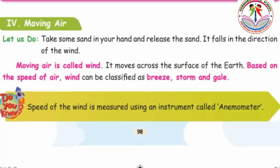Air can move from one place to another place, so the moving of air is called wind. Wind moves across the surface of the earth. Based on the speed of air, we can classify it as breeze, storm, and gale. We can measure the speed of wind using an instrument called an anemometer.